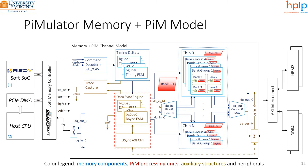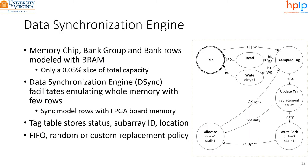Now let's have a detailed look at the data synchronization engine. The BRAM resources on the FPGA are thousands of times less than the target memory capacity to be modeled. We use a data synchronization engine which makes the rows local to memory banks act as any rows in the bank array. The desync engine is implemented as a textbook cache, using a tag table to store row status, subarray ID, and address location. Upon a read or write, the row address is compared with values in the tag table. On a hit, the bank module row index is returned and no stall is issued. On a miss, the bank module row is selected for update by the replacement policy, its data written to board memory, and the new row data fetched. A stall signal is issued during write-back and allocate states to pause all modeled activity and accurately preserve emulated time ticks.